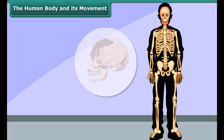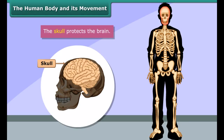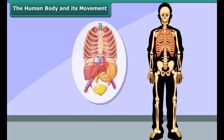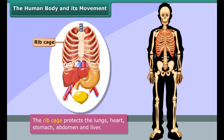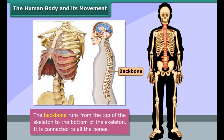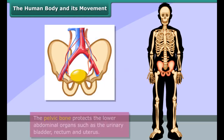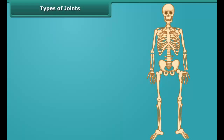Most of the bones protect our organs. The skull protects the brain, while the ribcage protects the lungs, heart, stomach, abdomen, and liver. The backbone runs from the top of the skeleton to the bottom and is connected to all the bones. The pelvic bone protects the lower abdominal organs, such as the urinary bladder, rectum, and uterus.